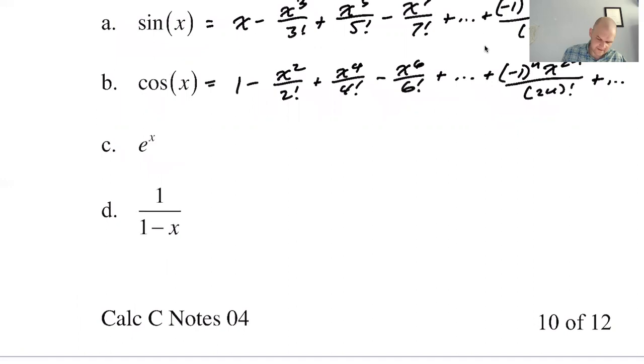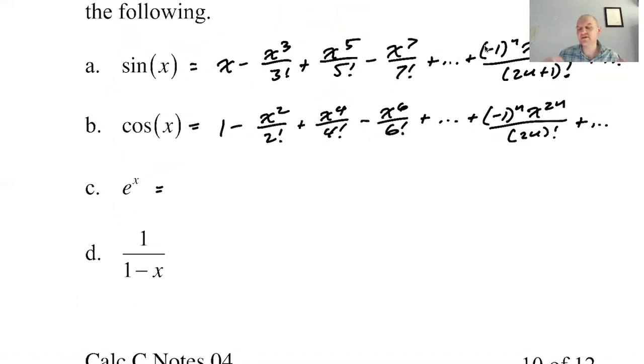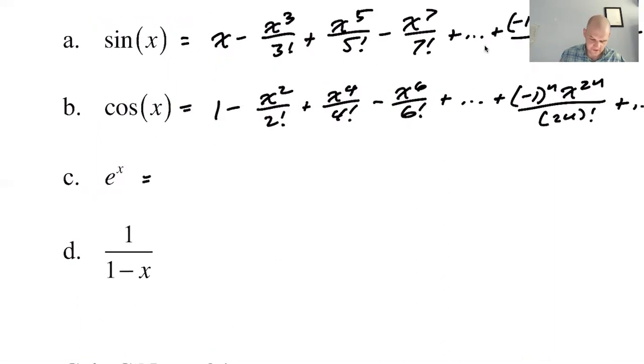Cosine's even, so we get the even powers. And then E, E just has all of them, and it doesn't alternate. It's almost like you're adding these two together, but you're not. So every power with its factorial.